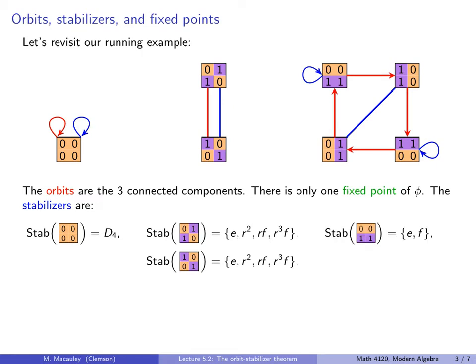Let's look at the orbit on the right now, starting with the upper-left square 0011. The stabilizer of this is — well, it's fixed by the identity action, but also by F, as you can see from the blue loop. No other element fixes this: if you apply R you move away and can only return via R, R, R or R, F, R — which is just F.